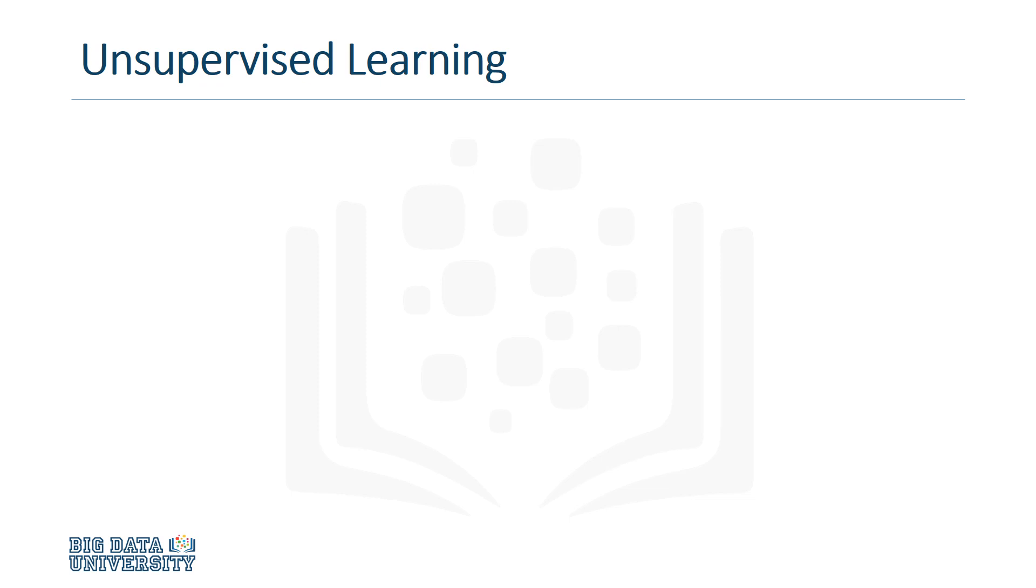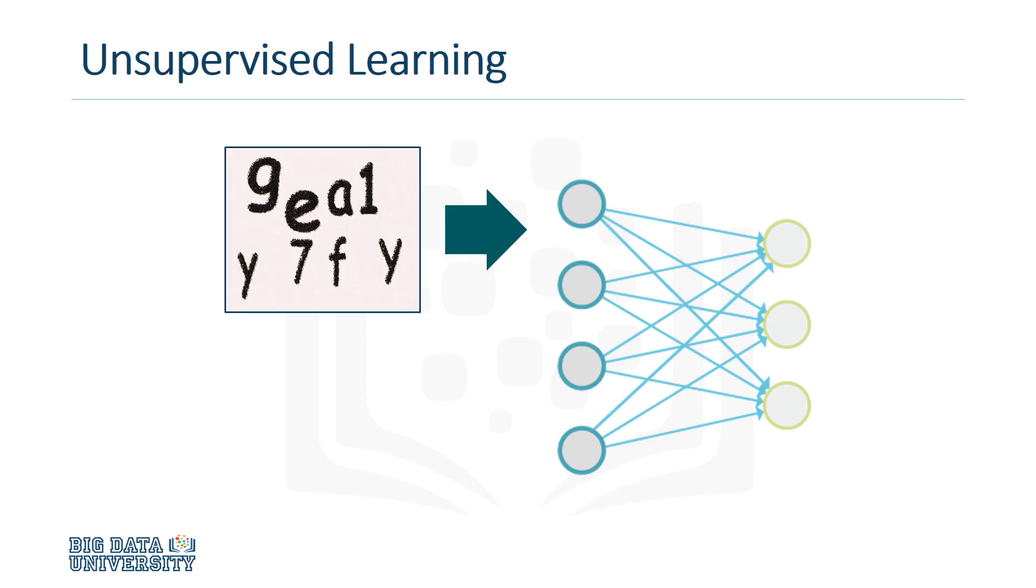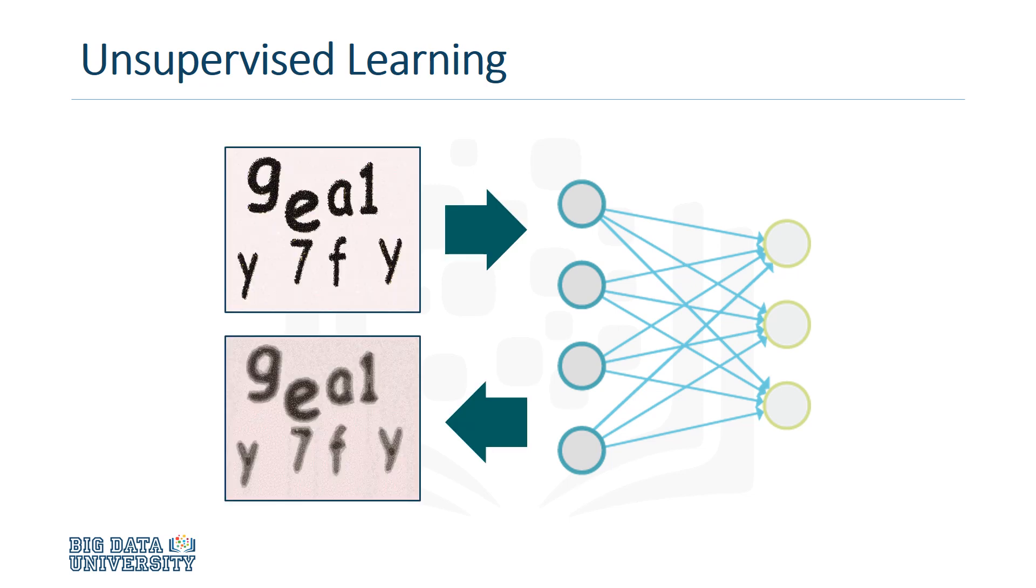In Module 4, we'll introduce you to unsupervised learning. Our main focus will be on the restricted Boltzmann machine, which detects patterns by reconstructing its input. After creating and training a restricted Boltzmann machine in TensorFlow, we'll show you how to build a movie recommendation system.